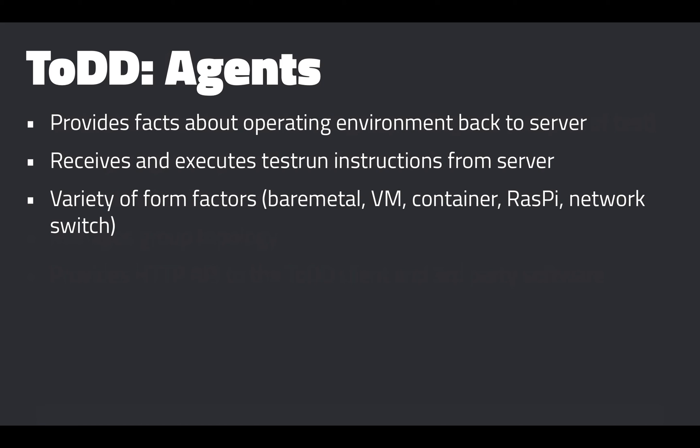There's a Dockerfile in the repo to do this quite easily, and that Dockerfile is used to push the TODD Docker container to Docker Hub, so you can pull it quite easily. You could also compile this for ARM — for instance, a Raspberry Pi. Or if you really want to get fancy, you could compile this for your network switch vendor if they allow you to do so. Since it's just a compiled binary, the form factor is almost irrelevant — you can make it however you want.